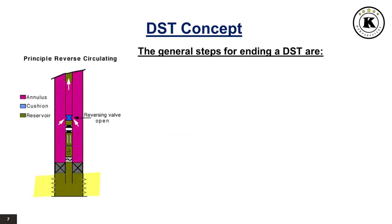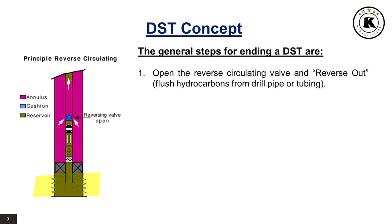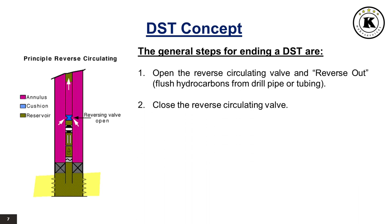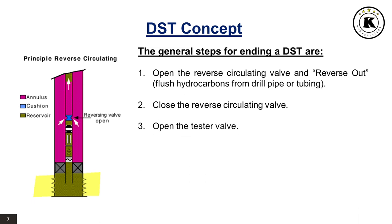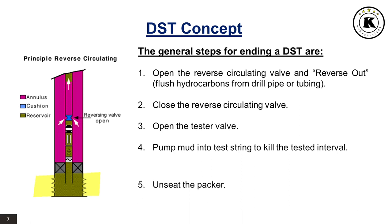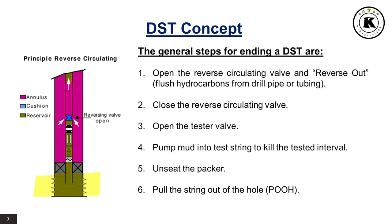The general steps for ending a DST are: 1. Open the reverse circulating valve and reverse out, flushing hydrocarbons from drill pipe or tubing. 2. Close the reverse circulating valve. 3. Open the tester valve. 4. Pump mud into the test string to kill the tested interval. 5. Unseat the packer. 6. Pull the string out of the hole.